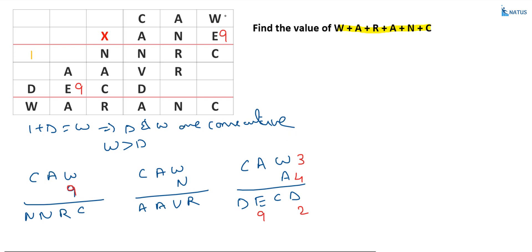Now, 4 into 3 equals 12, one carry over. 4 into 4 equals 16, plus 1 equals 17, so C is equal to 7. Substitute 7 wherever C exists. Checking: 4 into 3 equals 12, one carry over; 4 into 4 is 16 plus 1 equals 17, one carry over; 4 into 7 is 28 plus 1 equals 29. All conditions are satisfied.